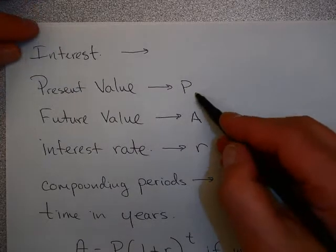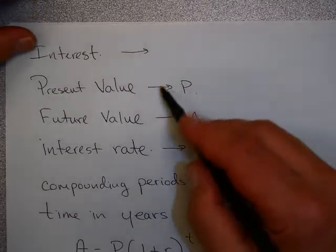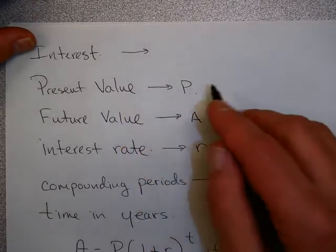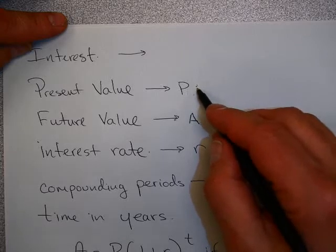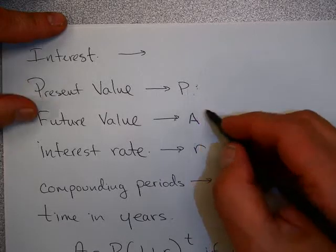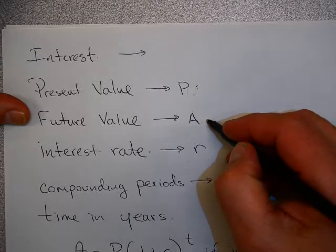Some terms that we use in interest are present value, or sometimes we use the word principle. This is the amount of money that you have today, the amount of money you are investing now. Future value, we use the symbol A for that, is the amount of money you want at some time in the future.